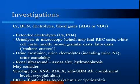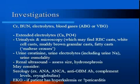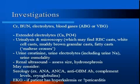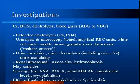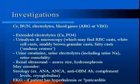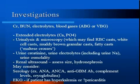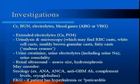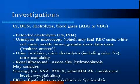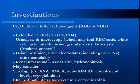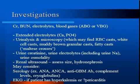Basic workup includes creatinine, BUN, electrolytes, and blood gases. A BUN-to-creatinine ratio greater than 10 is suggestive of pre-renal failure, because in dehydration, urea is reabsorbed by the kidney along with sodium and water, resulting in a relatively high BUN. Blood gases may reveal acidosis from impaired hydrogen ion excretion, and hyperkalemia is also a concern. Urine microscopy for casts is very helpful: RBC casts suggest glomerular nephritis, white cell casts suggest interstitial nephritis, muddy brown granular casts suggest ATN, and fatty casts may be seen in nephrotic syndrome.